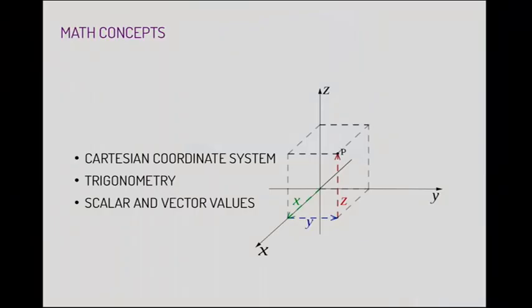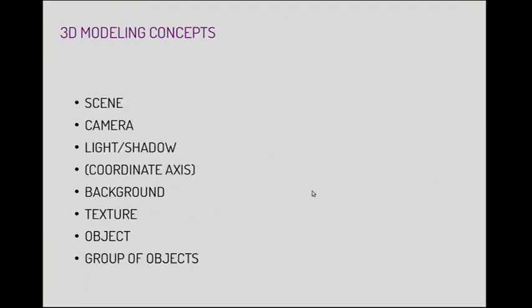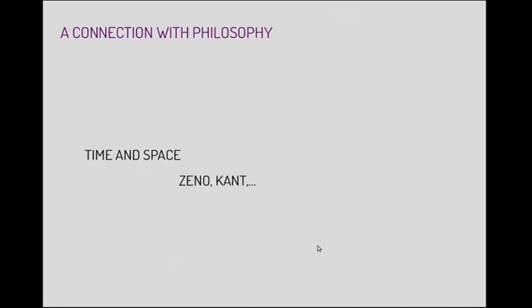Key math concepts include the Cartesian coordinate system, trigonometry, scalar and vector values. For 3D modeling concepts: cameras, lights, shadows, coordinate axes, background, textures, objects, groups of objects — in vPython the right term is 'frame'. There's also a connection with philosophy — time and space — but that's another talk.